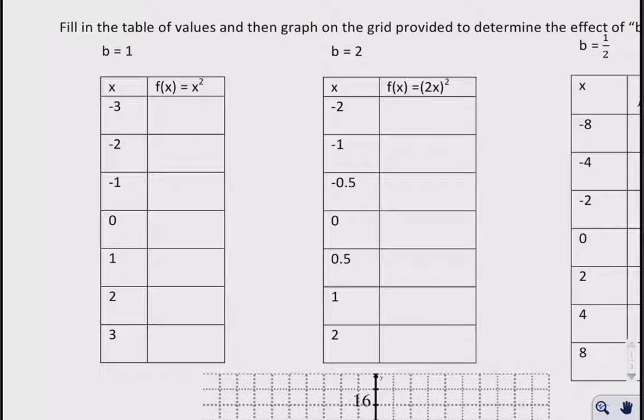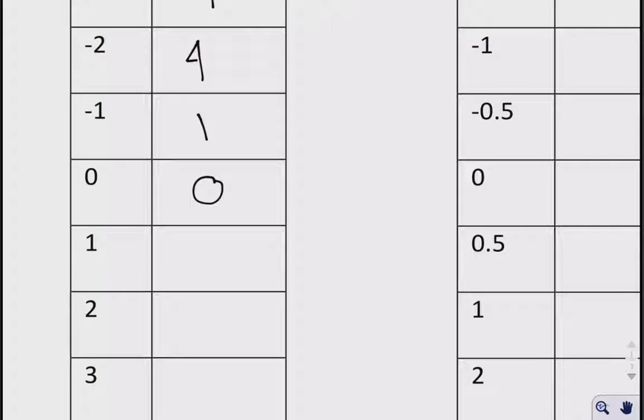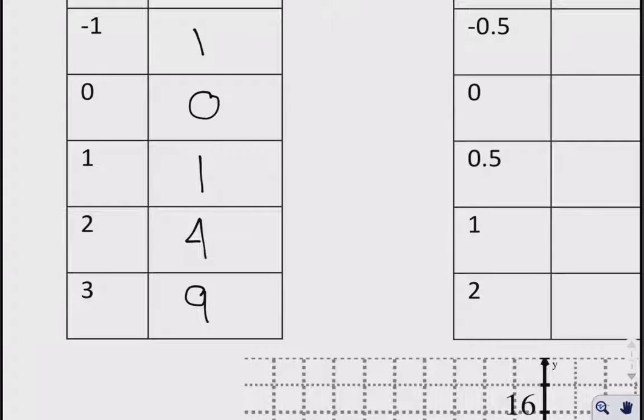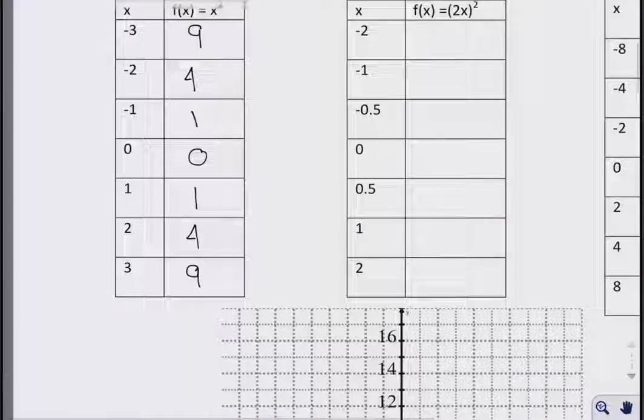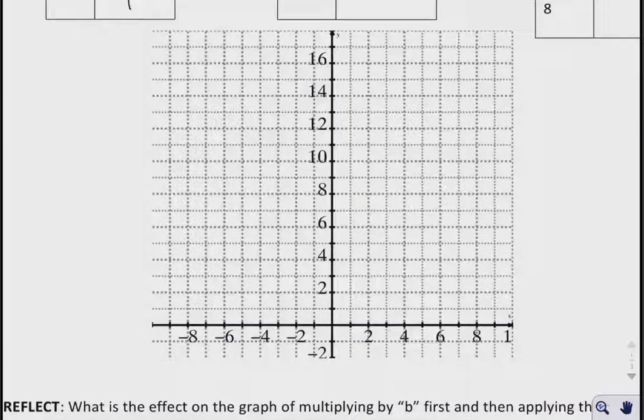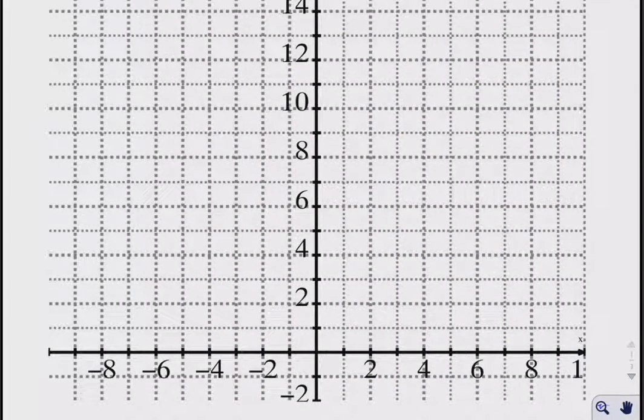Okay, so all we're doing is squaring the x values. So if I square negative 3, I end up with 9. Negative 2 gives me 4. Negative 1 gives me 1. Moving down, I get 0 here. I get 1 here. I get 4. And I get 9 once again. So if I were to graph this basic function, which you've probably done many times, I'm going to take my points and put them on this grid here.